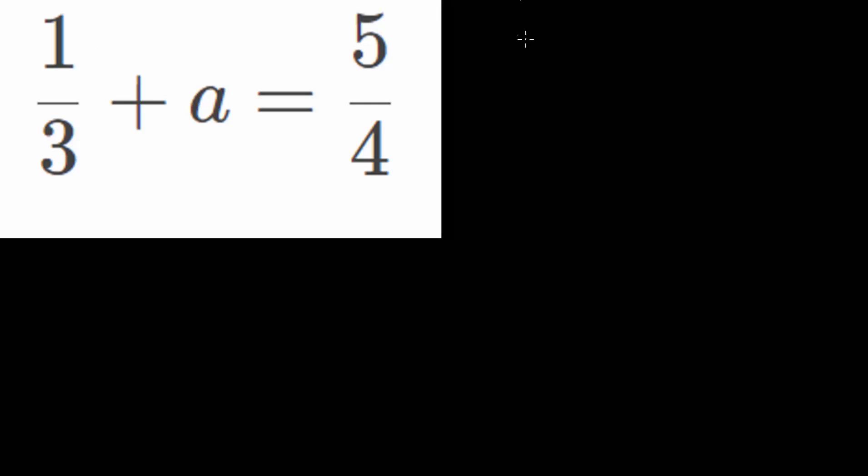This is very similar to the equation 3 plus a is equal to 5. To solve an equation like this, to find a by itself, we need to cancel out this positive 3 on the left-hand side. We need to get a by itself. Now, with something like this, you can think it through,